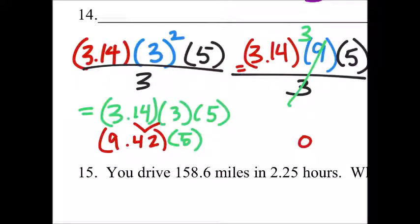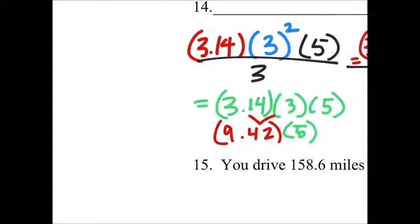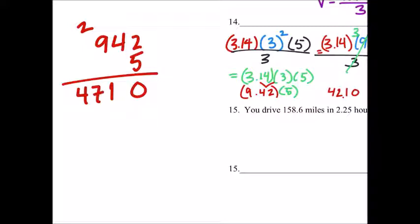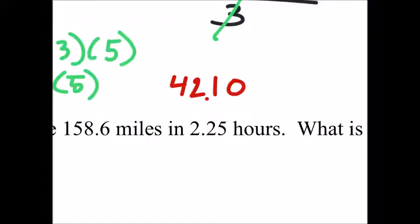9.42 times this 5. So, we've got... I don't know. 42.1. Let me just double check that. 9.42 and 5. 10, 21. Yeah. Oh, 47. What the heck. I think that's right. 47.10.